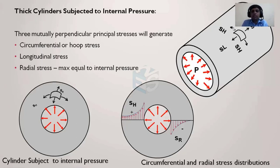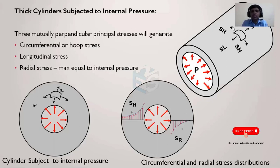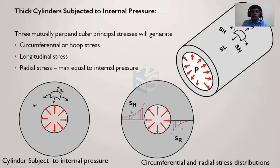In a thick cylinder, the radial stress has a significant value and cannot be neglected. Thick cylinder theory is based on, for example, the von Mises distortion energy theory, where the acceptance criteria are not based on individual principal stresses alone. Instead, an equivalent stress is calculated as a combination of all three stresses, and that equivalent stress is compared with the allowable stress — unlike principal stress theory, where each stress is calculated individually and the maximum must be less than allowable.